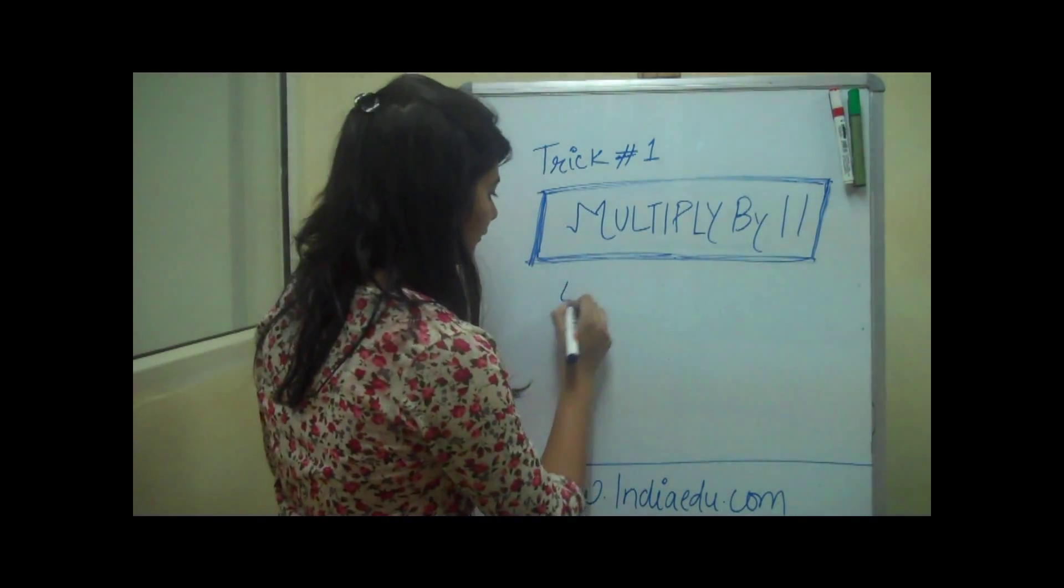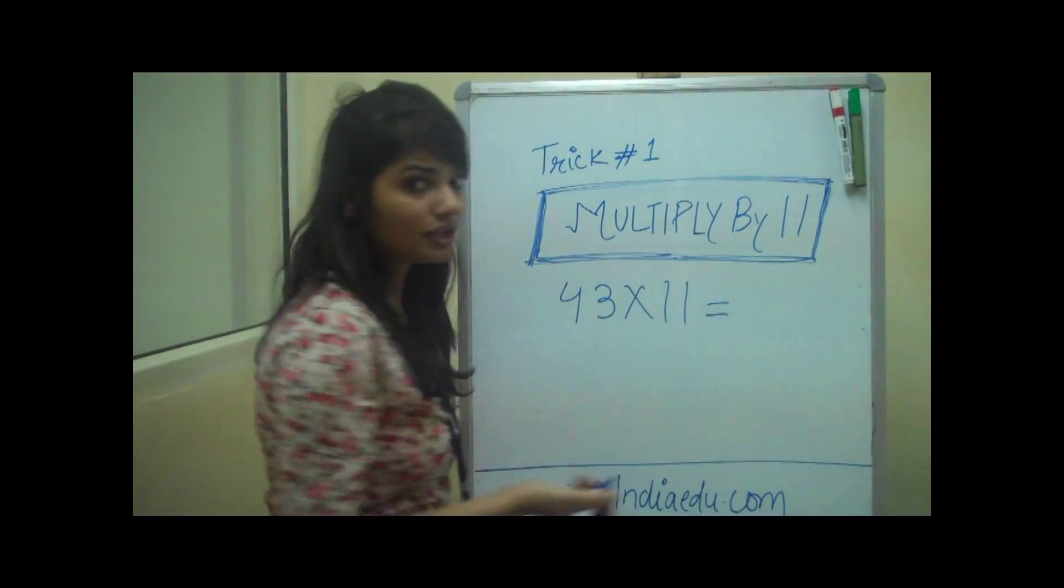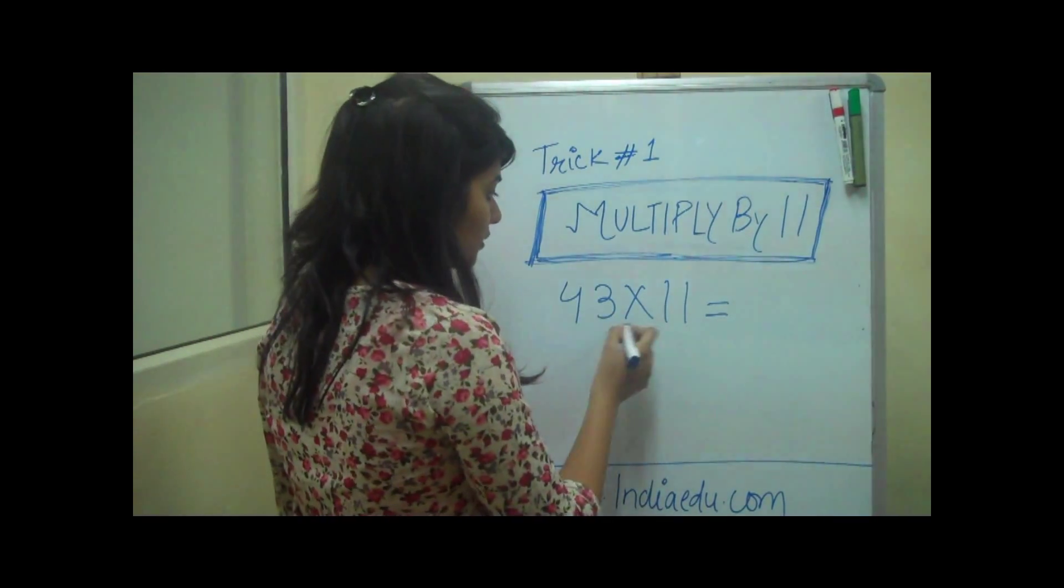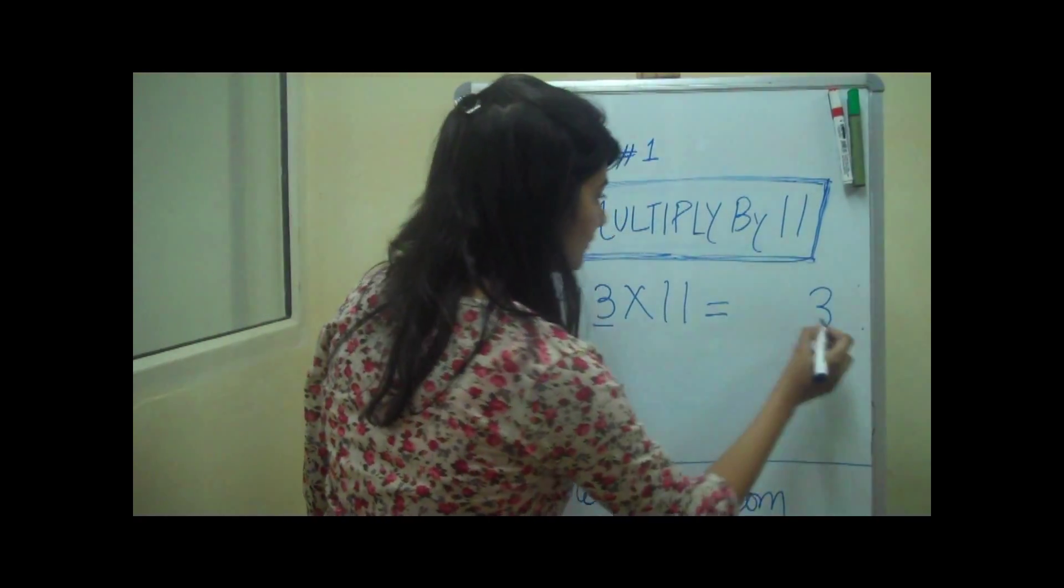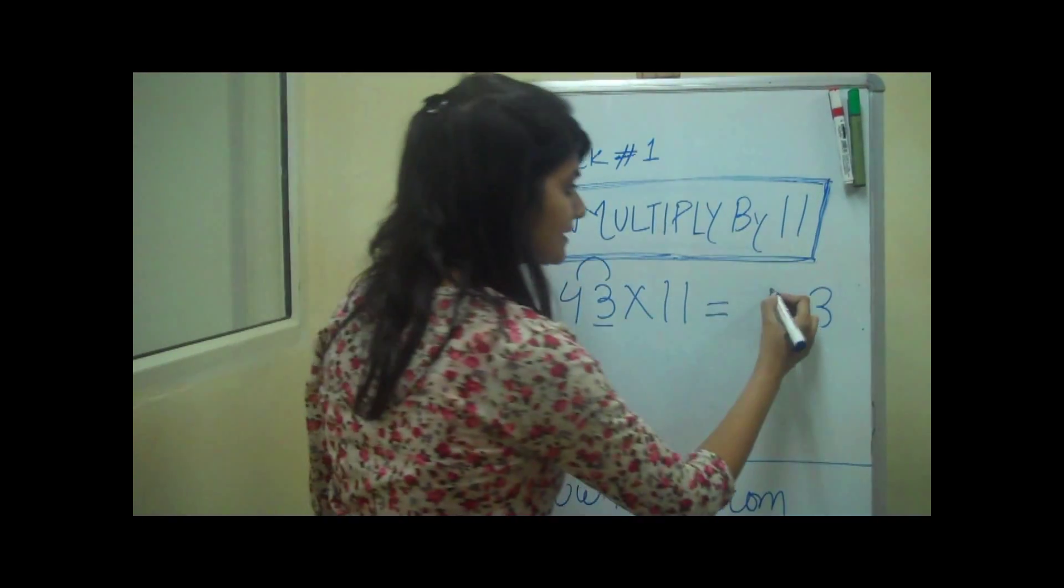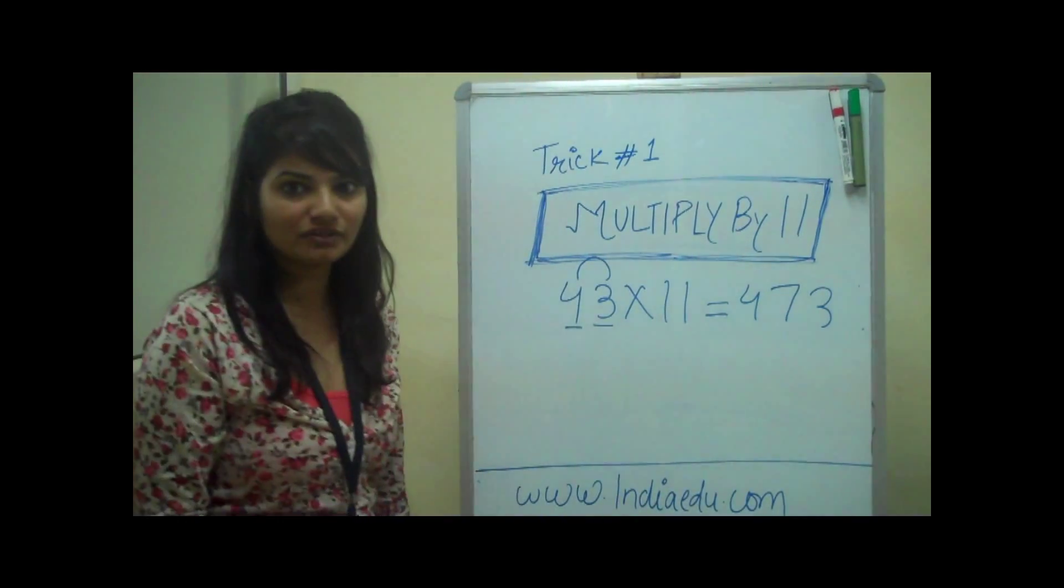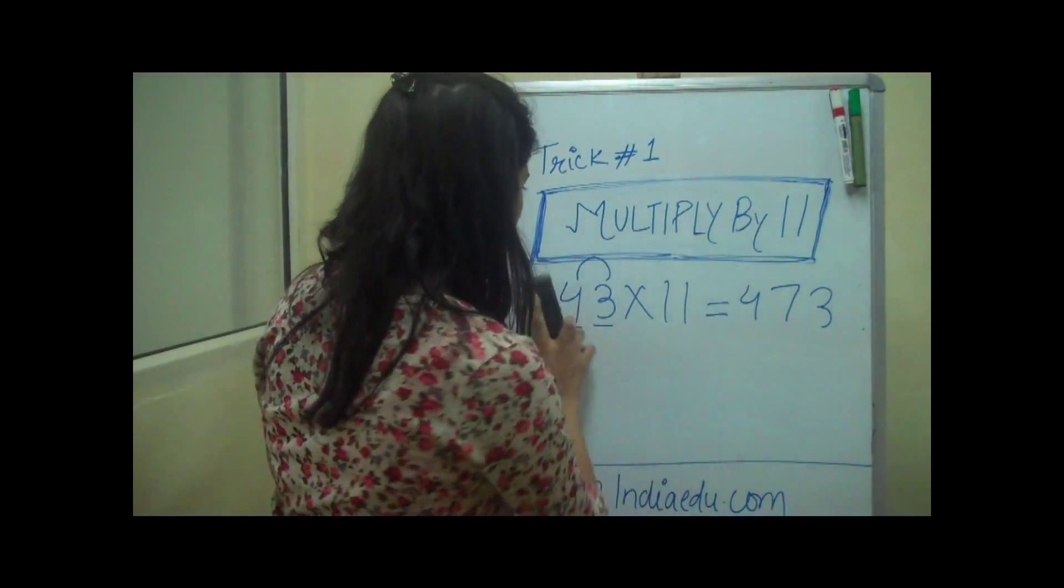Let's take an example of 43 into 11. Can you solve this in two seconds? I can. You take a number, put it here, first number. Then you add this number to this number, 4 plus 3 is 7, and then you put the first number as it is. 473. It's so simple. Let's take another example.